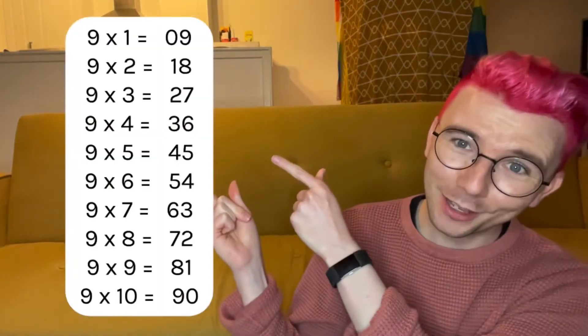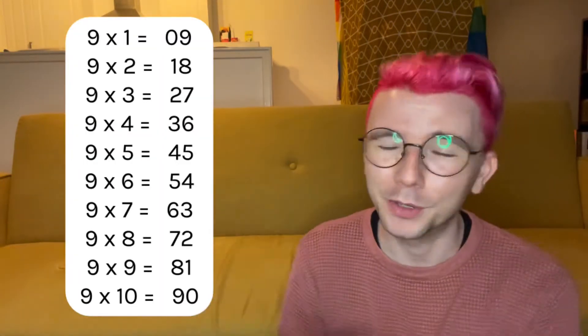Before jumping into those patterns, let's go over the answers of the nine times table. Nine times one is nine, nine times two is 18, nine times three is 27, nine times four is 36, nine times five is 45, nine times six is 54, nine times seven is 63, nine times eight is 72, nine times nine is 81, and nine times ten is 90. And here they are, just to make sure I was correct.